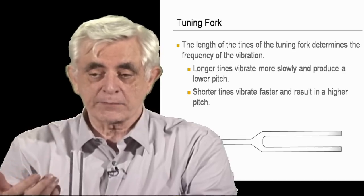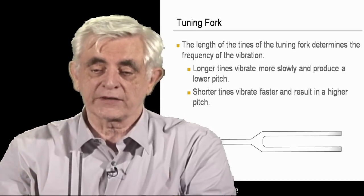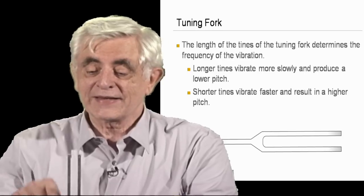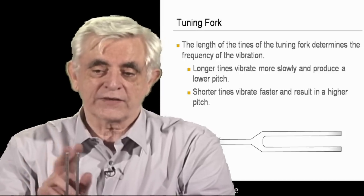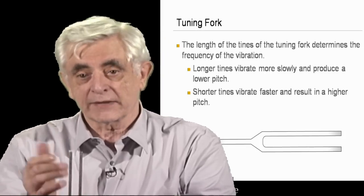The faster they vibrate, the higher the pitch. The slower they vibrate, the lower the pitch. And the length of the tuning fork will determine how fast they vibrate. Really long tuning forks take more energy to vibrate, so they vibrate slower, giving you a lower pitch.